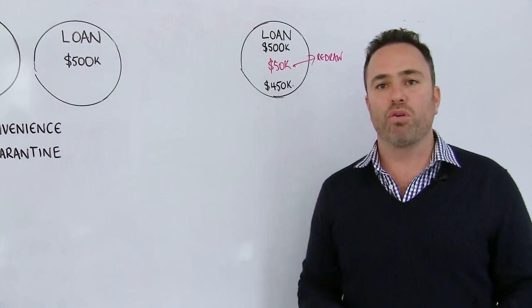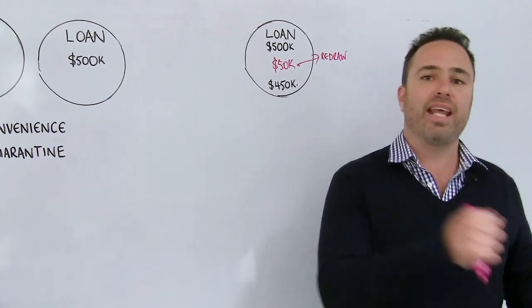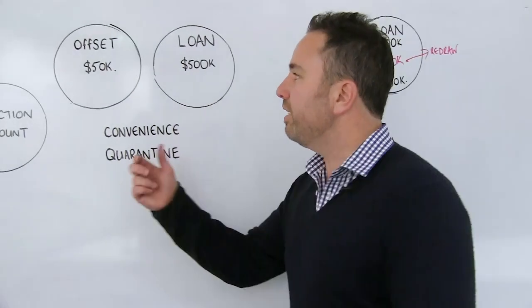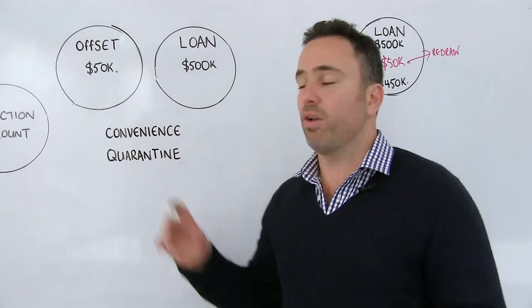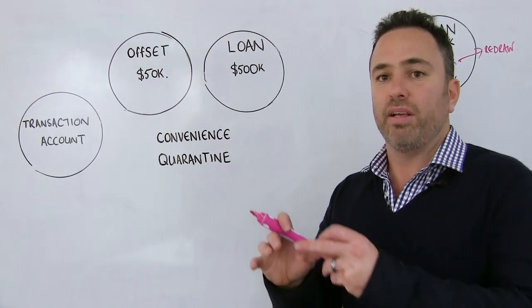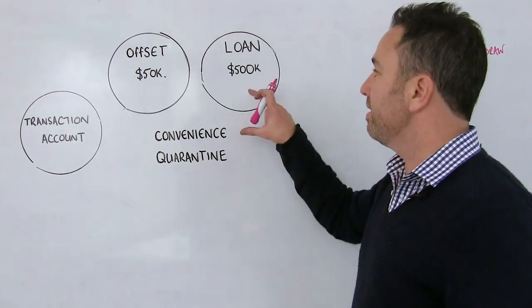Now to access that redraw, I have to go into the loan and I have to take it out and put it into my nominated bank account. We jump over to here. And the difference between the redraw and the offset account is there's two separate accounts. So it's about the quarantining of the accounts or the separation of the accounts.